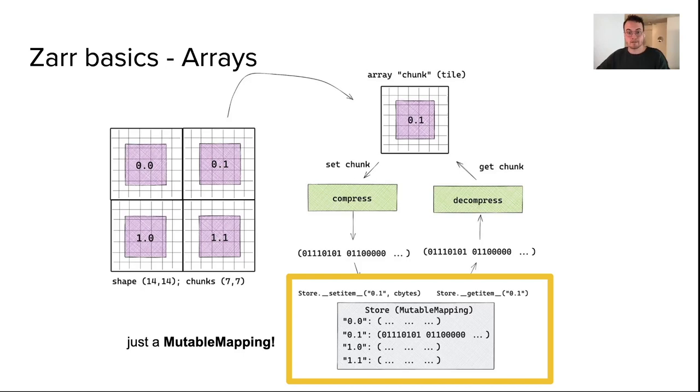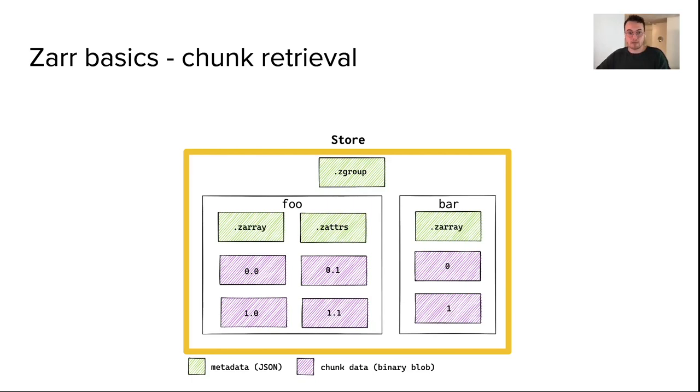Going back to the example from before with these two labeled arrays, foo and bar, I can access chunk data simply by using a unique key from the store. And I can access array metadata for the bar array using a different key.